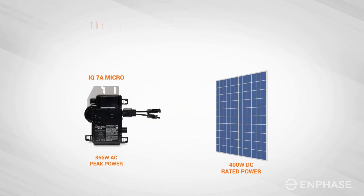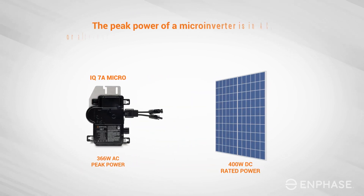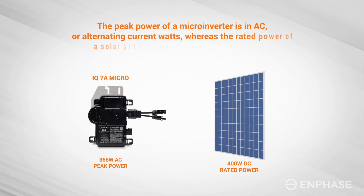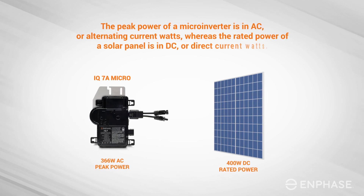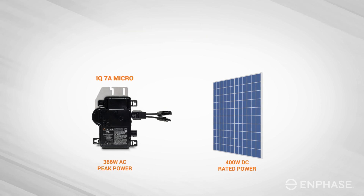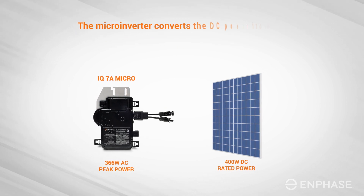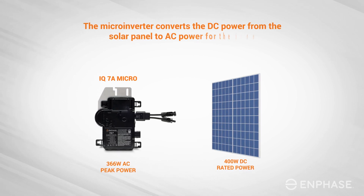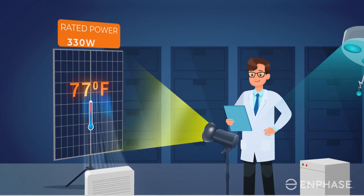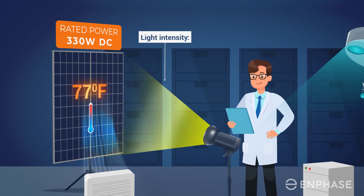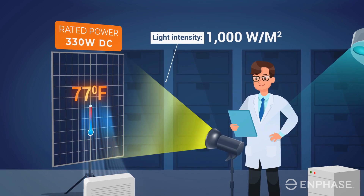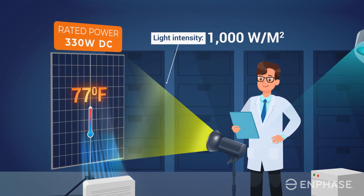The peak power of a microinverter is in AC, or alternating current watts, whereas the rated power of a solar panel is in DC, or direct current watts. The microinverter converts the DC power from the solar panel to AC power for the home. It is important to understand that the DC rated power of a solar panel does not reflect the power it will produce in real-world conditions.